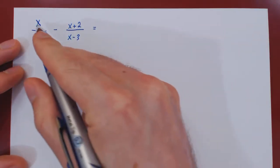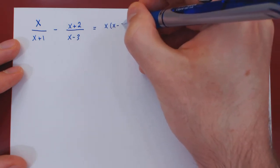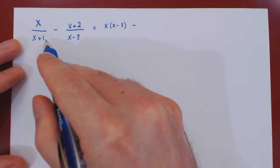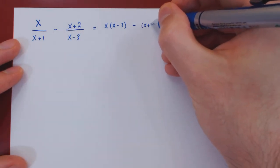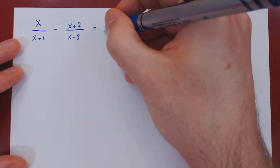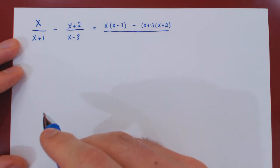So we will get x times x minus 3 minus x plus 1 times x plus 2 divided by, of course, x plus 1 times x minus 3.